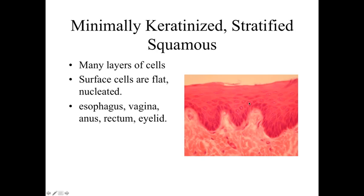Looking at stratified epithelia, generally we're looking at stratified squamous — many cell layers thick with flat squamous surface cells. There are two categories. The first is minimally keratinized stratified squamous: the surface cells have little nuclei present, so we have living cells all the way to the apical surface. Surface cells have nuclei so they're alive but flattened. This is found in regions lining moist cavities subject to abrasion — areas like the esophagus, vagina, anus, rectum, and eyelid. Look for the biological space, epithelial lining, basement membrane, and underlying connective tissue.